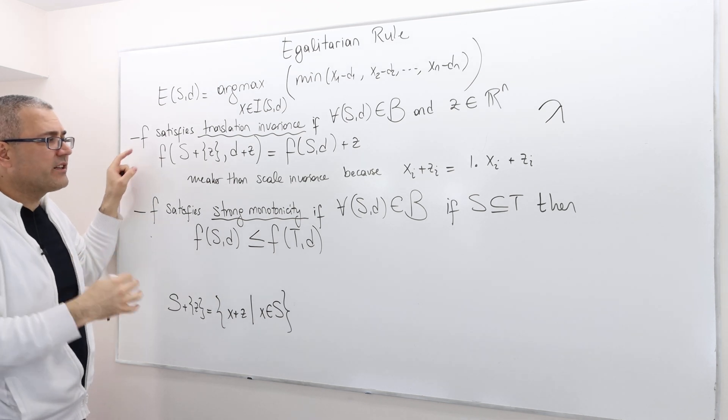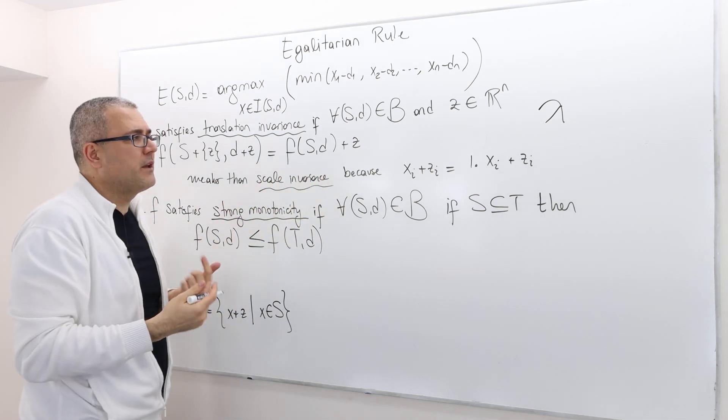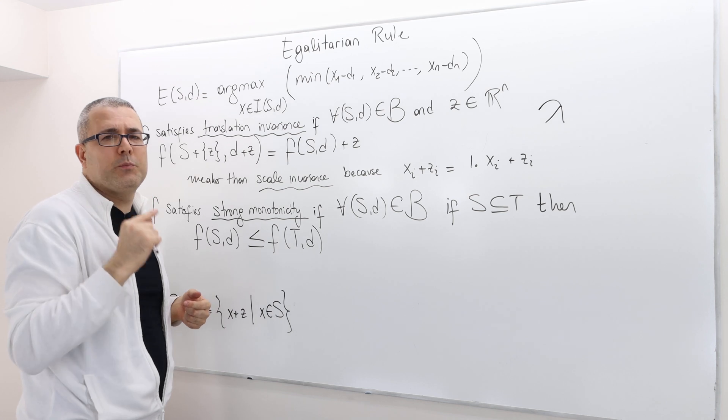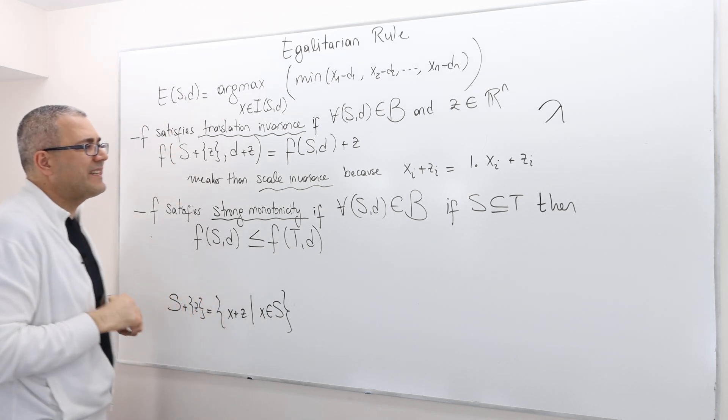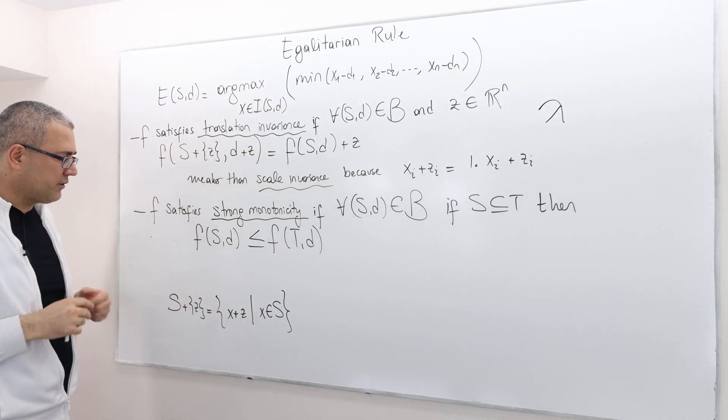Again, this is weaker than scale invariance because, as I said, that's just one specific scaling, one positive affine transformation.